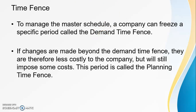The demand time fence is the number of periods from the current period during which very few or no changes can be made to the master schedule. The number of periods can be decided based on the cost involved in making changes. If it is very costly to make changes, then the demand time fence can be set to a number of weeks. But if the cost of adjustment is minor, then the demand time fence can be a day or two.